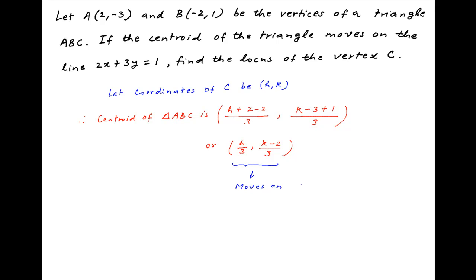Now we are given that the centroid moves on the line 2x + 3y = 1. Therefore the centroid must satisfy the equation of this line, which implies that 2(h/3) + 3(k - 2)/3 = 1. This implies that 2h/3 + k - 2 = 1.